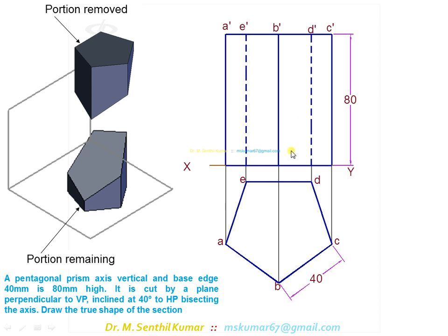We will concentrate more on the section part. The section plane is seen as a line in front view because it is perpendicular to VP, inclined at 40 degrees to HP. So you have to draw a 40-degree line in the front view. It is bisecting the axis, so the axis coincides with the edge passing through B dash. Find out the midpoint and through the midpoint, draw a 40-degree line.